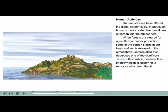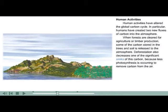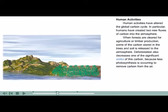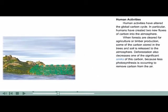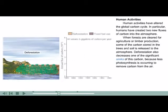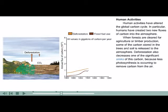Human activities have altered the global carbon cycle. In particular, humans have created two new fluxes of carbon into the atmosphere. When forests are cleared for agriculture or timber production, some of the carbon stored in the trees and soil is released to the atmosphere. Deforestation also decreases one of the significant sinks of this carbon, because less photosynthesis is occurring to remove carbon from the air.